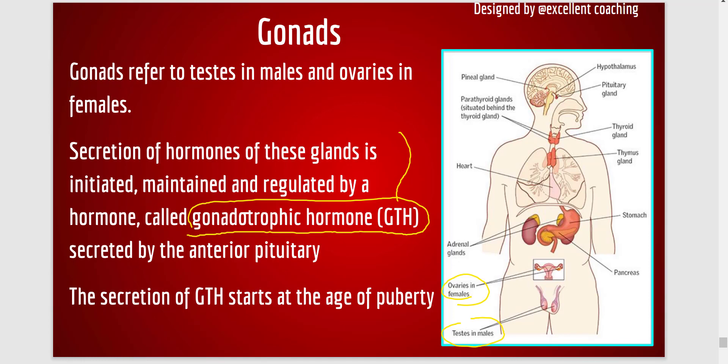Coming to males, when the male gonads are stimulated, they release hormones called androgens. Androgens are the male sex hormones, and the major androgen hormone is testosterone. Testosterone is responsible for the sexual changes in the male body, and is also responsible for increased aggression behavior due to changes in sexual characteristics. These are the gonads and the hormones stimulated by GTH, which is produced by the anterior pituitary.